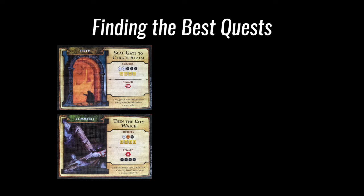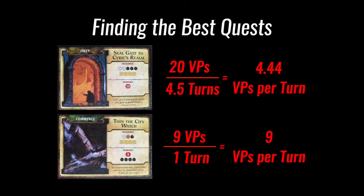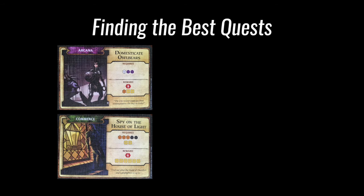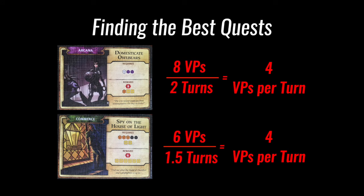Let's take a look at a few more quests. Here are two pretty different quests: Seal Gate to Cyrix Realm and Thin the City Watch. Looking at their turns versus victory points, sealing the gate gets you only 4.4 victory points per turn, but Thin the City Watch gives you 9 victory points per turn — it's such a cheap quest that I expect it to get picked up as soon as it hits the board. On the other hand, Domesticate Owl Bears and Spy on the House of Light have almost the exact same ratio of victory points per turn, so just pay attention to whichever rewards you want and how to chain your quests together.